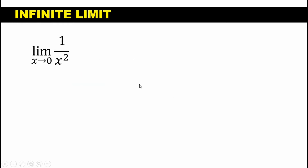Let's have an example. Say we are asked to solve for the limit of 1 over x squared as x approaches 0. If we try to use substitution for this particular function, our denominator will become 0, and 1 over 0 is undefined. You might think that the limit does not exist. However, if we use a table of values, we can actually solve the limit of this particular function.